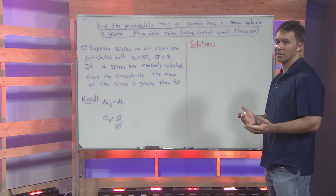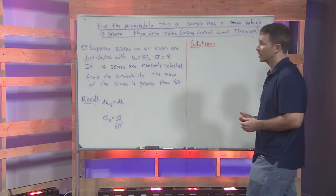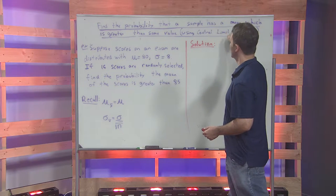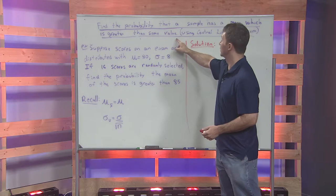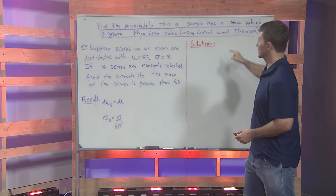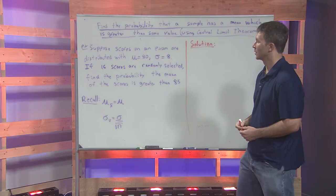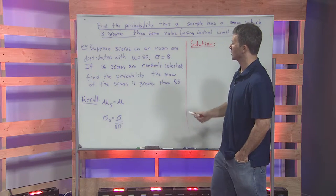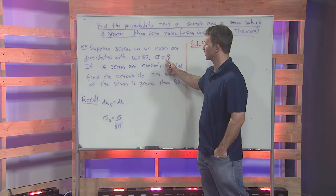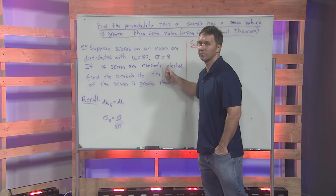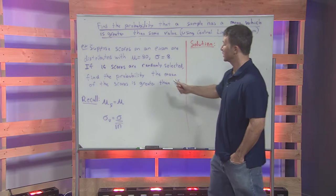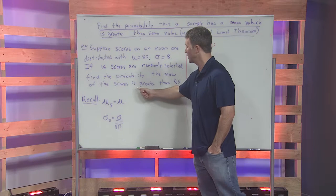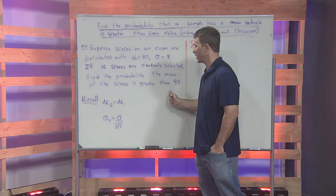In this example, we're talking about the central limit theorem. In particular, we're going to find the probability that a sample has a mean which is greater than some value using the central limit theorem. So suppose scores on an exam are distributed with mu equals 80 and sigma equals 8. If 16 scores are randomly selected, find the probability that the mean of the scores is greater than 85.